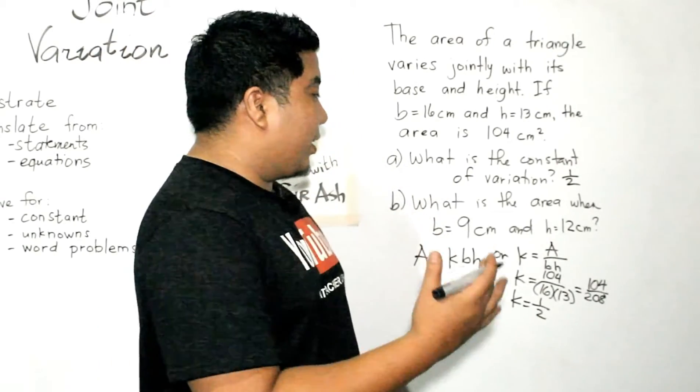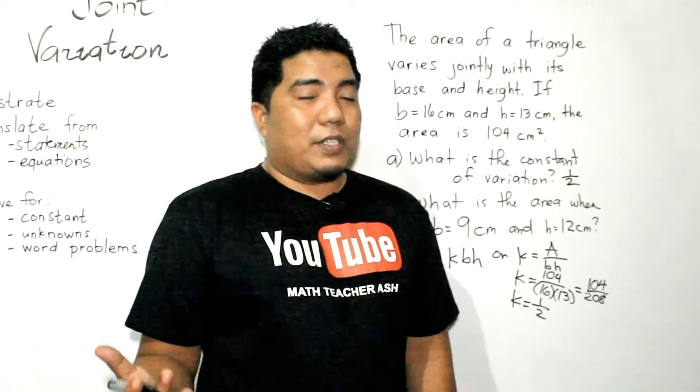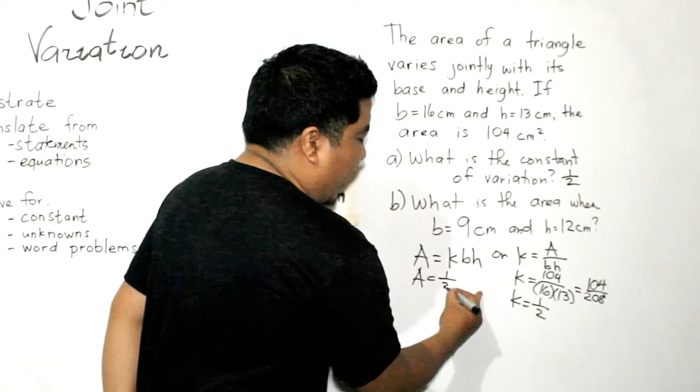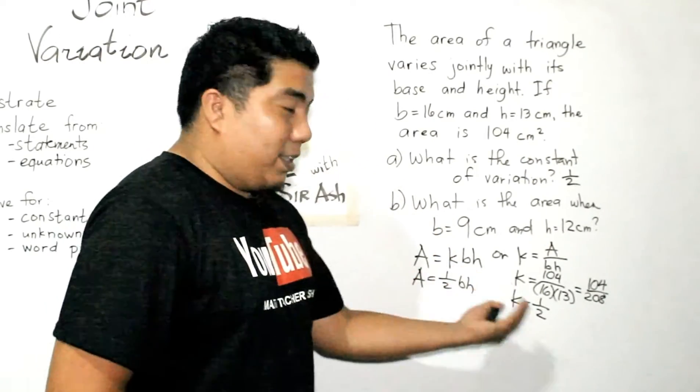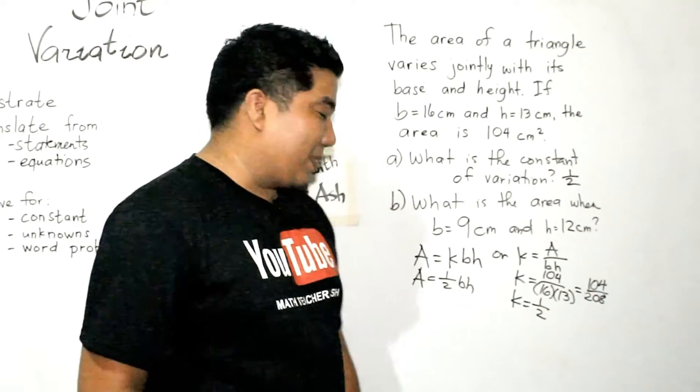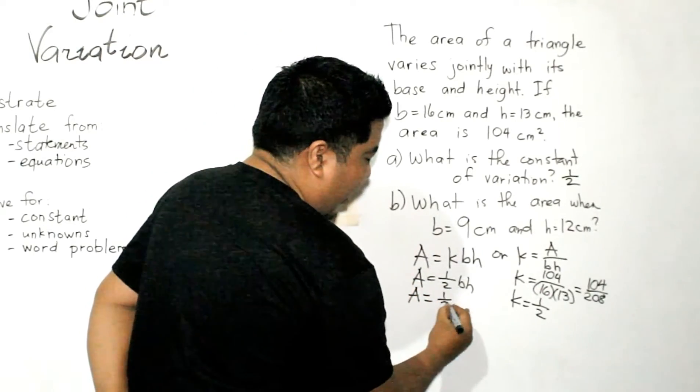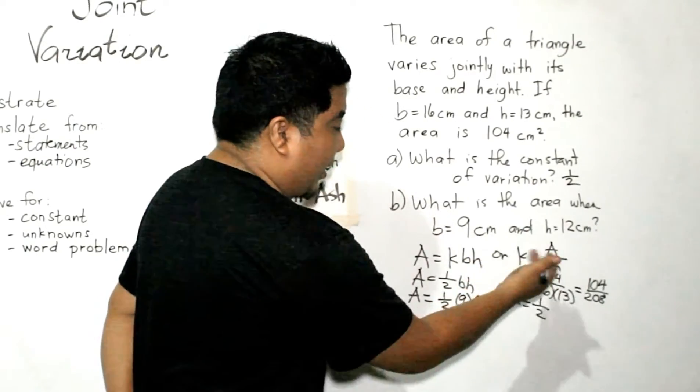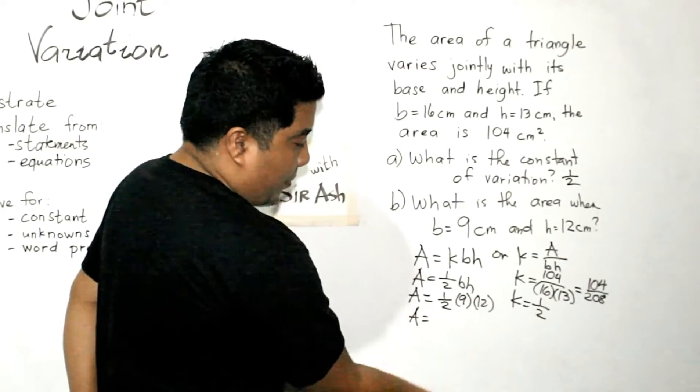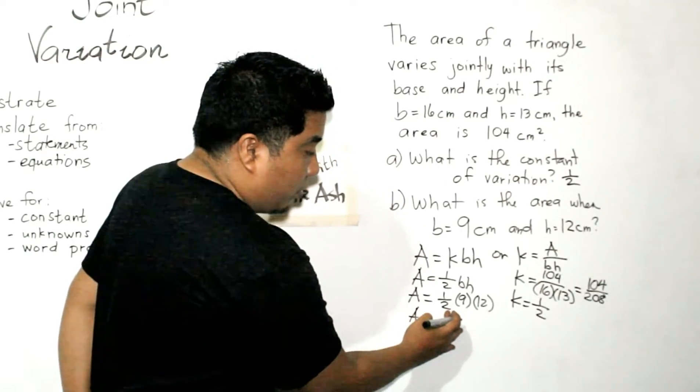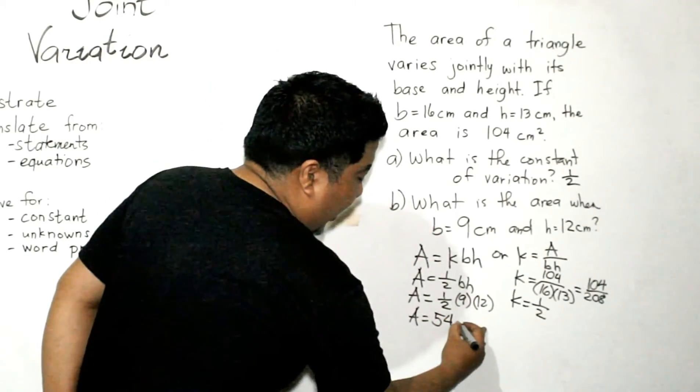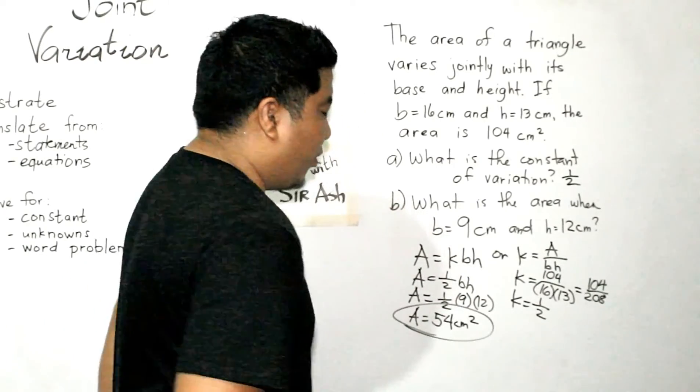So, the next question is, what is the area when our base is 9 centimeters and our height is 12 centimeters? So, what we can do here is, we just need to make our equation with the use of our K, and that is one half base times height. Now, as you can see, this is the actual formula for the area of a triangle. That is, area is equal to one half base times height. Now, let's try to solve our area with our base as 9 and our height as 12. So, that gives us, we can make some techniques here. We can use 12 divided by 2. 12 divided by 2, that is 6. 6 times 9, that is 54 square centimeters. And that will be your final answer.